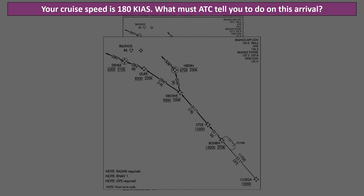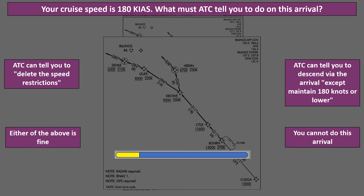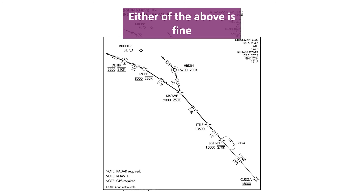Unlike on an approach, clearance to fly the arrival does not include permission to leave previous altitudes to hit the published restrictions on the plate. For that, you need a "descend via" instruction. For the next question, let's say your SR-22T will cruise comfortably at 180 knots indicated airspeed. What must ATC tell you to allow you to do this arrival? Either ATC can tell you to delete the speed restrictions, or tell you to descend via the arrival except maintain 180 knots or lower — either is fine. There are two mandatory speed restrictions on this arrival: 270 knots indicated at Bighorn, and if landing east, 210 at Deller. Unless ATC revises this, you'll be unable to meet these mandatory speeds. The other speed restrictions at Crow, Izufe, and Harden are not problematic, since their maximum speeds will be under anyway.